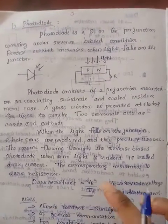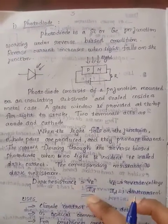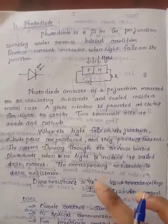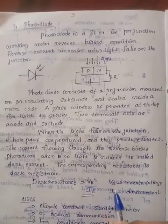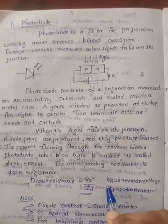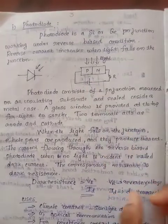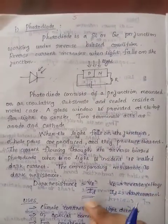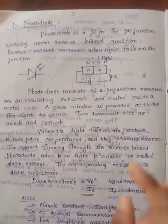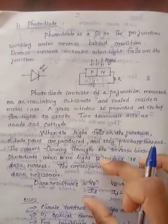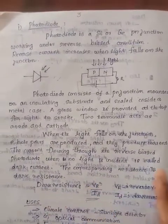Dark resistance R is equal to V by I, so R equals VR by ID, where VR is the applied reverse voltage and ID is the dark current. Therefore, dark resistance equals VR divided by ID.